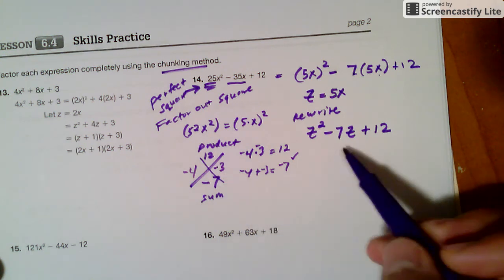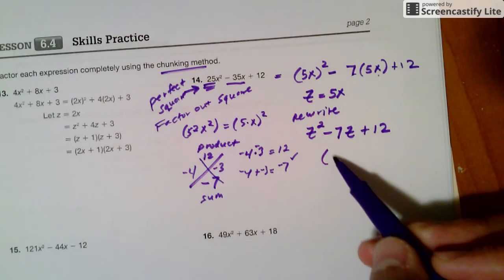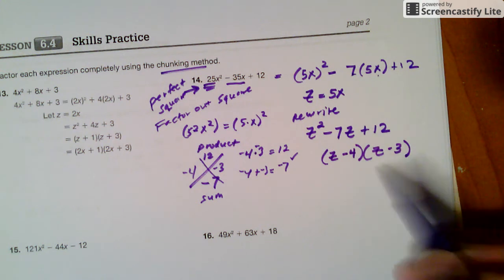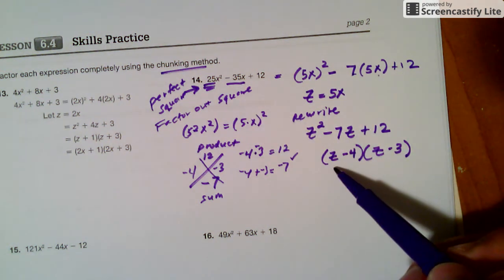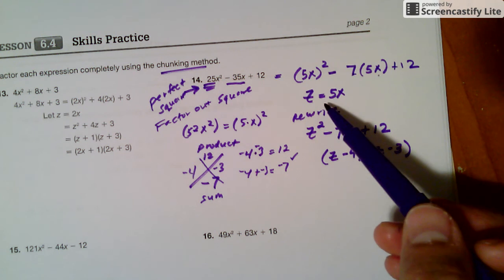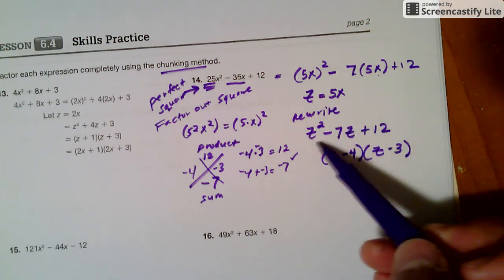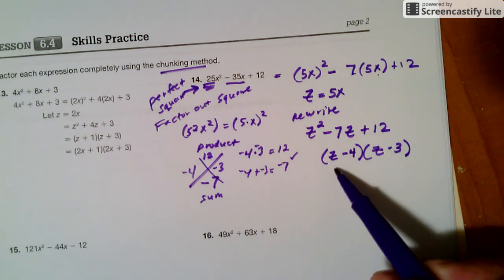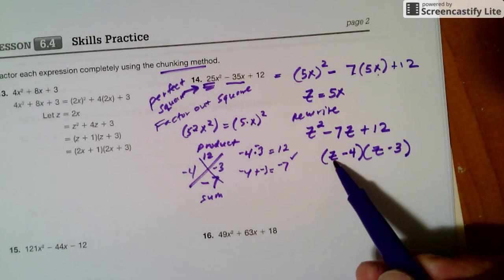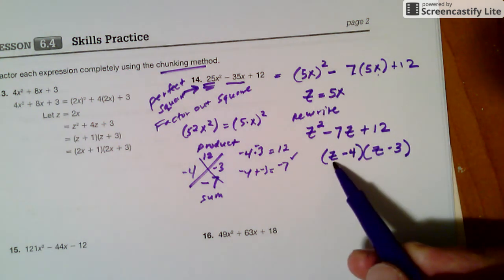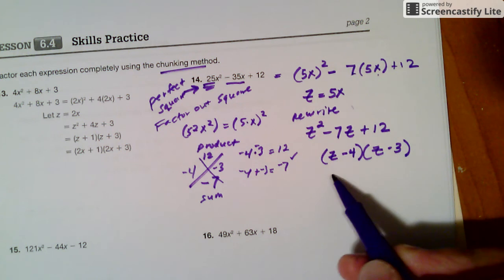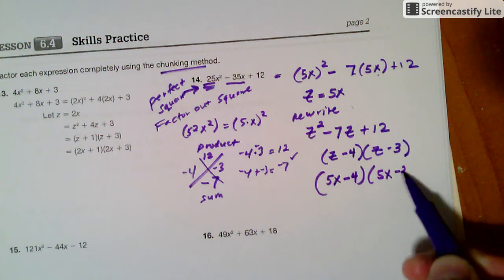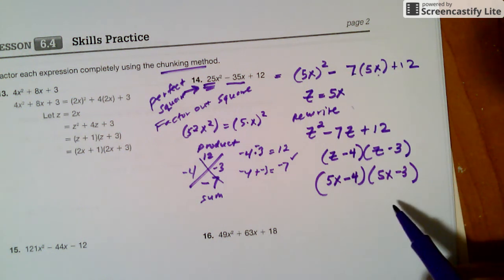So this actually factors out to be z minus 4, z minus 3. Now, you started with x, so you need to finish back with x. Z is just a tool we're using to rewrite so that it looks like something we're comfortable with. And then we can factor it. And then we want to substitute back and get back to x's. So instead of saying z, z was 5x. So I'm going to substitute back to 5x. Instead of z, I'm going to say 5x minus 4, and then 5x minus 3. And then you guys are done at this point.